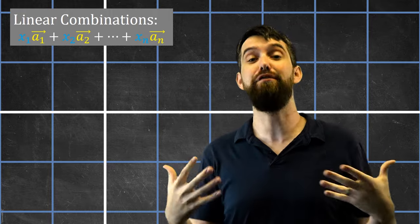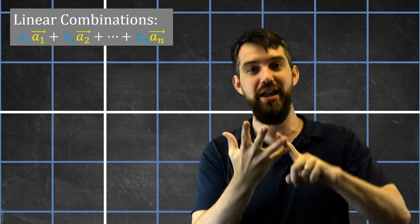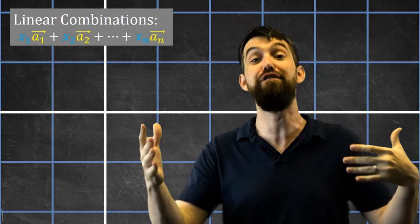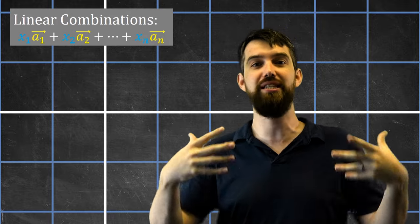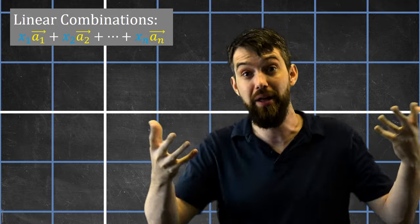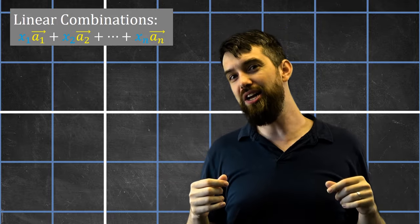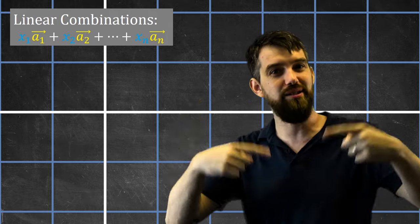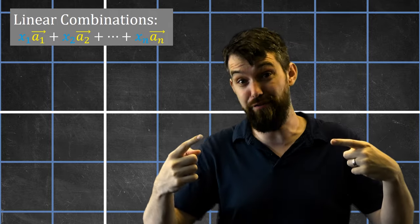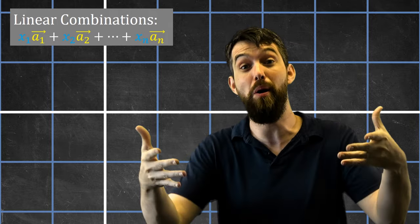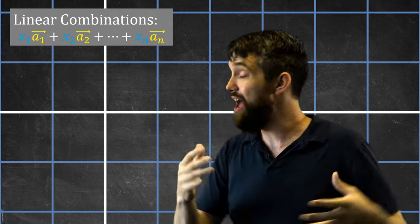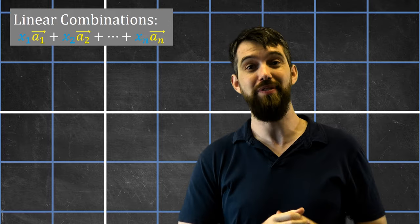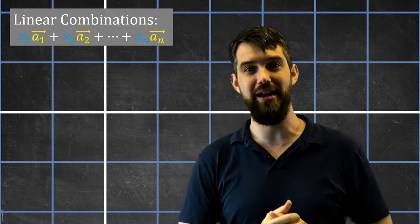If I have many different vectors a1, a2, a3 — a list of different vectors living in Rᵐ — I can multiply each of those vectors by different scalar multiples and then add them all up together. That's what a linear combination is.